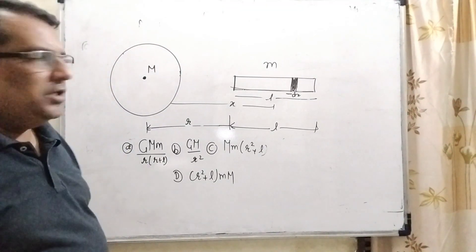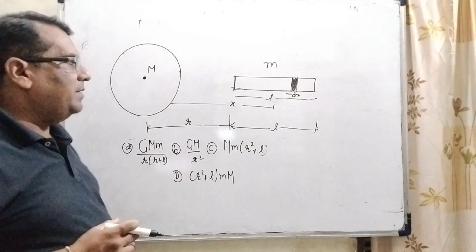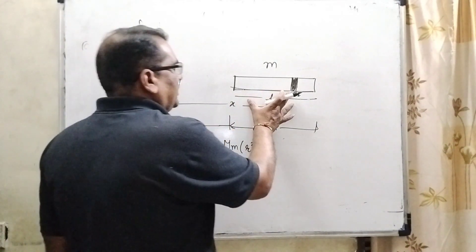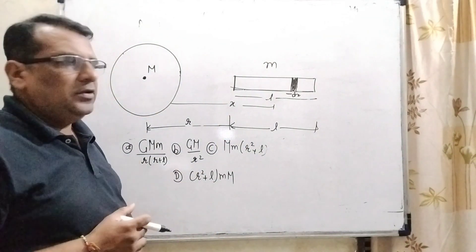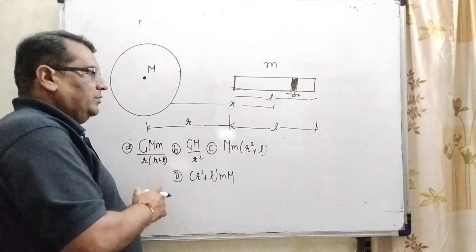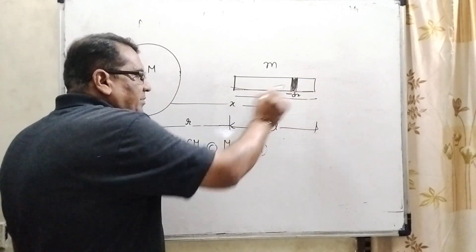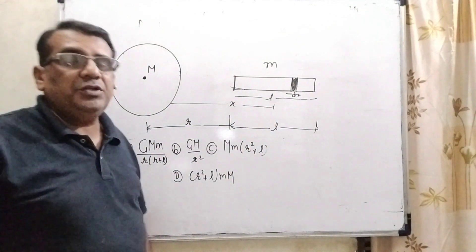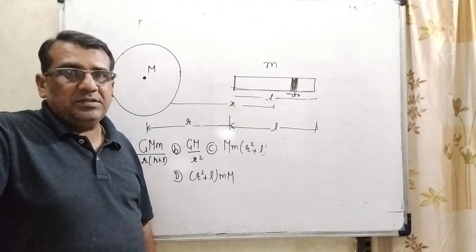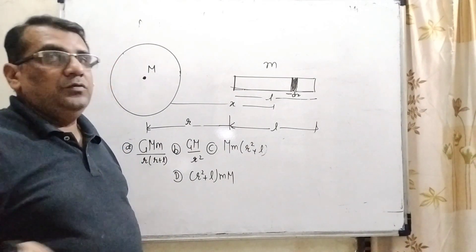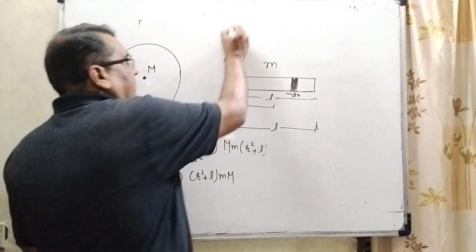Now, what is the question? We have a sphere of mass M and a rod of length l and mass m. We have to find the force of attraction. Since the element dm is oriented and will vary, we are not using the center of mass method. So we will use the length element and mass element. Let us consider dm.